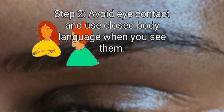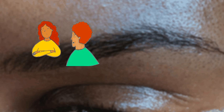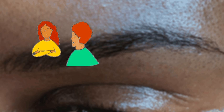Step 2: Avoid eye contact and use closed body language when you see them. Averting your eyes sends the message that you don't want to talk, and it can give them the impression that you don't see them. Make yourself look unapproachable by keeping your chin down and looking away. Cross your arms across your body to shut them out. If you're sitting down, cross your legs. Keep your eyes forward, and if they're right in front of you, look down or away. You might pretend to check your phone, or if necessary, frown or look angry to show you're not in the mood to talk.